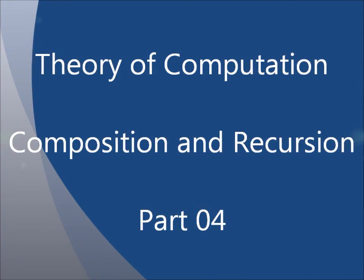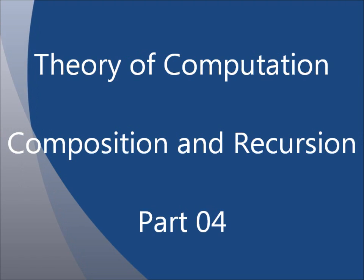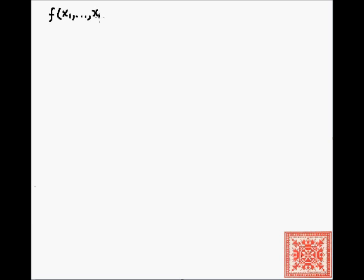In this screencast we'll continue our discussion of composition and recursion from the previous three screencasts on this topic. This is another definition of primitive recursion. Let's assume we have two total functions: the first function f takes n arguments x1 through xn.